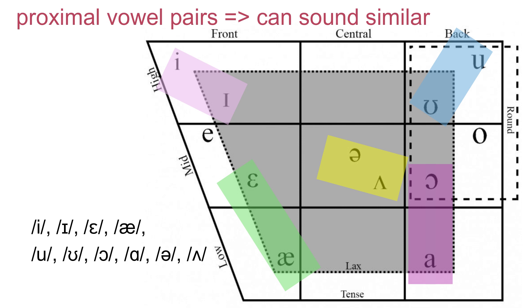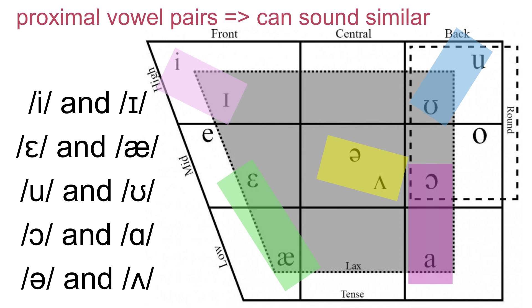Among the ten pure vowels, the pairs we will study are: E and I, E and A, U and UH, AW and AH, and UH and UH. We'll learn these vowel pairs.